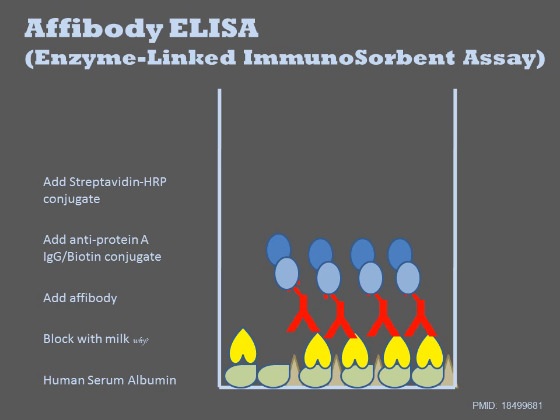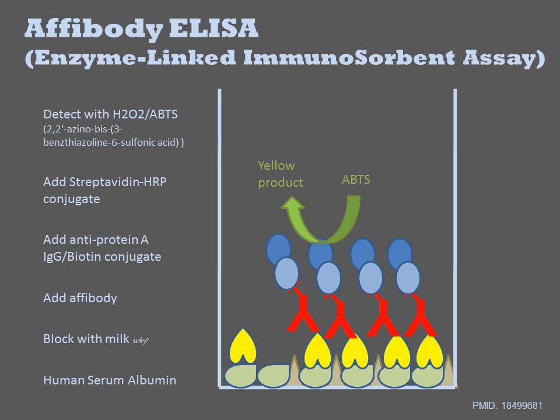We then add streptavidin HRP conjugate, which will bind to the biotin. Finally, we add hydrogen peroxide and a chemical substrate called ABTS. Upon reaction with HRP, a detectable product results.